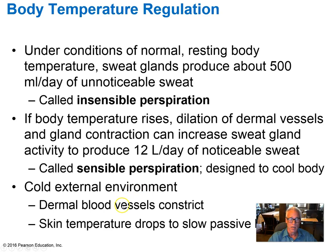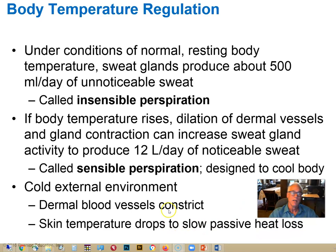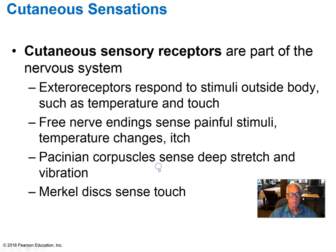If the body temperature begins to fall or we're exposed to a cold environment, the hypothalamus will initiate constriction of blood vessels in the skin. This reduces the heat gradient and pulls warm blood away from the surface beneath the insulating fat of the hypodermis, slowing the loss of heat from the surface and helping maintain body temperature.